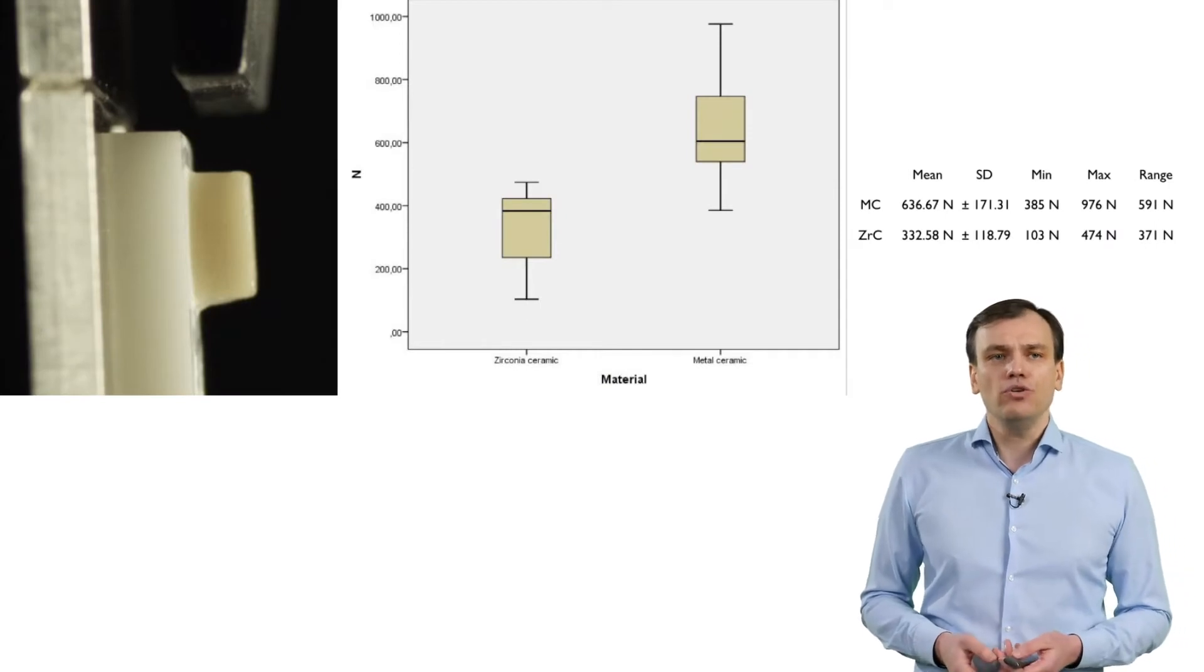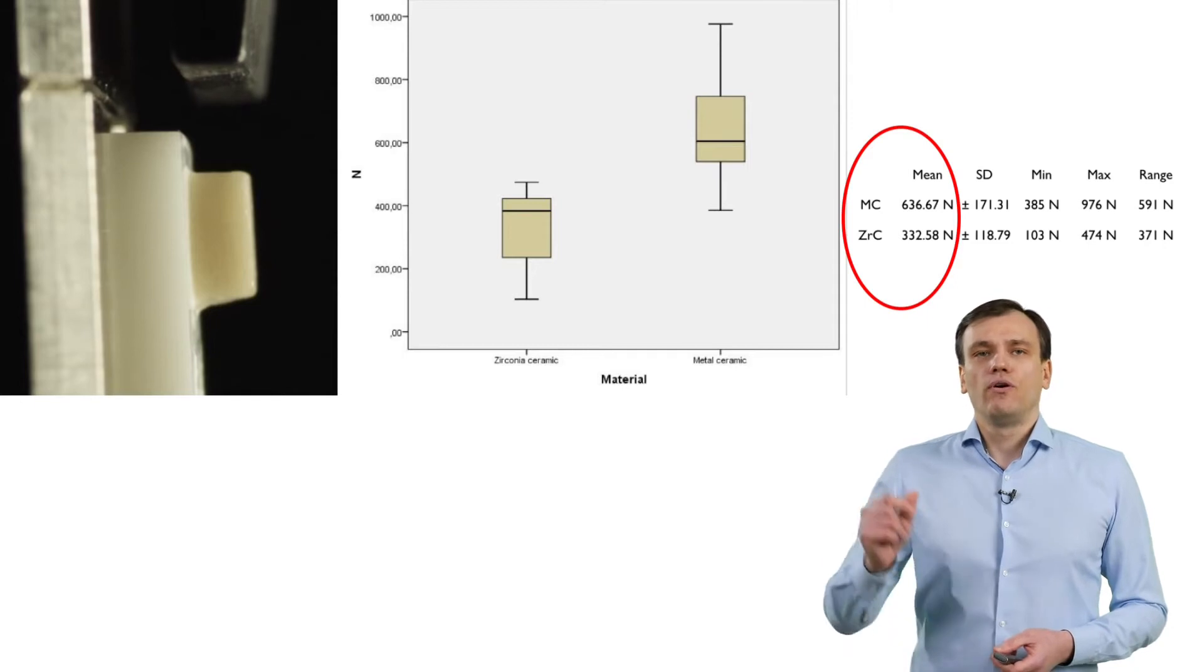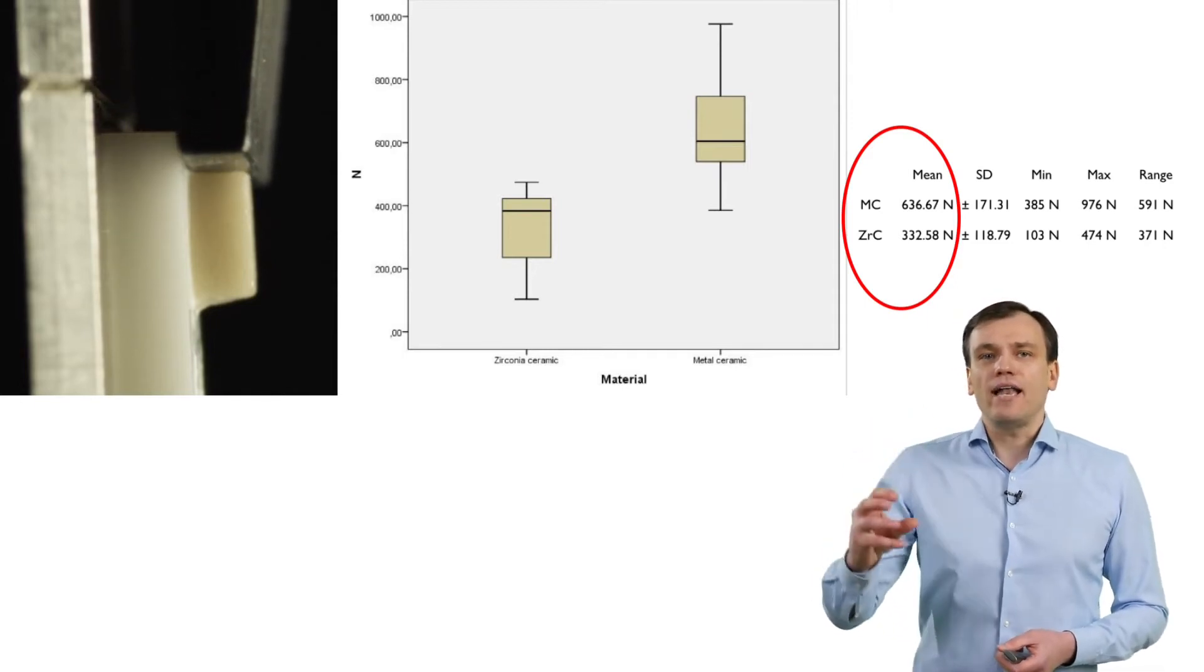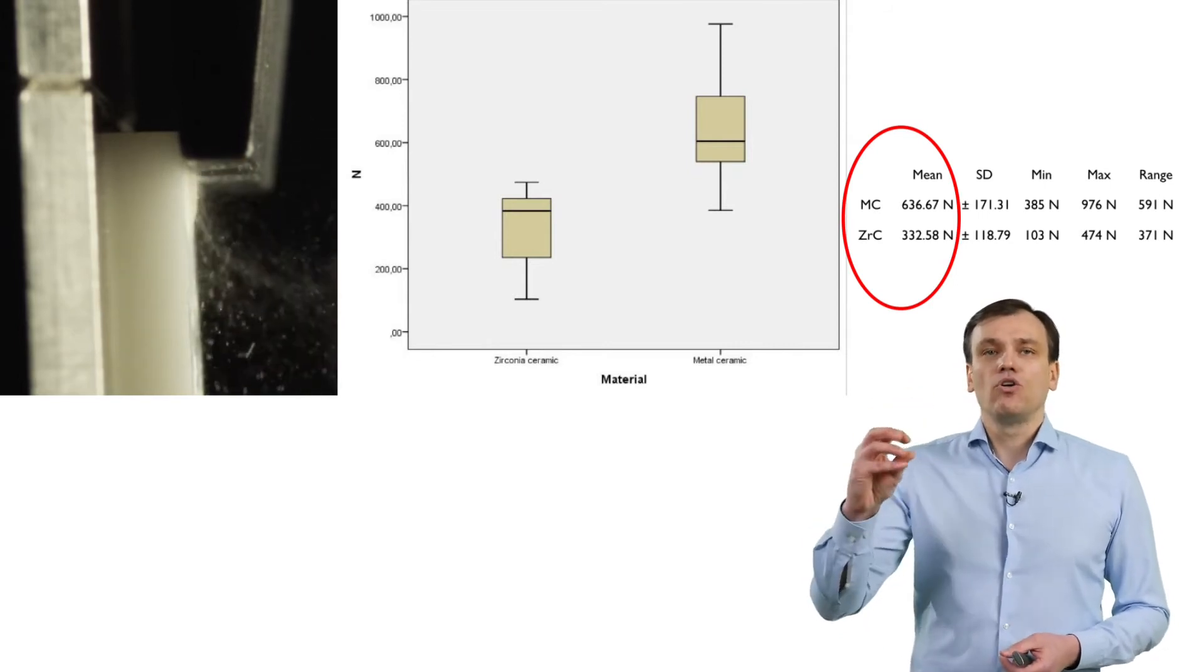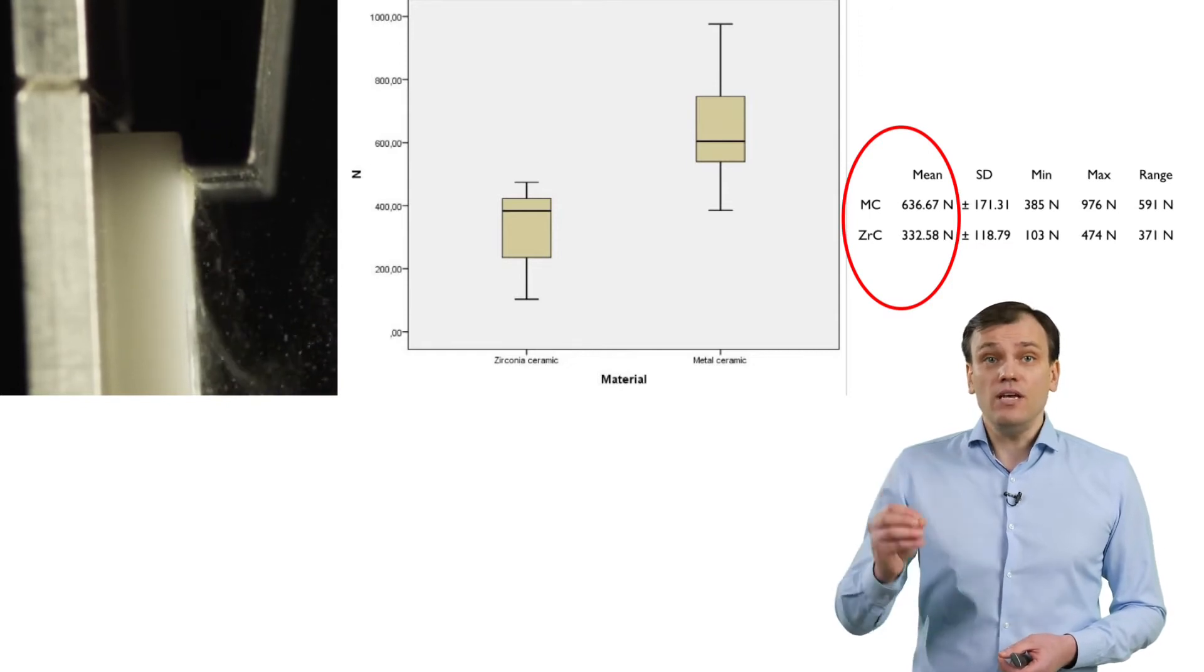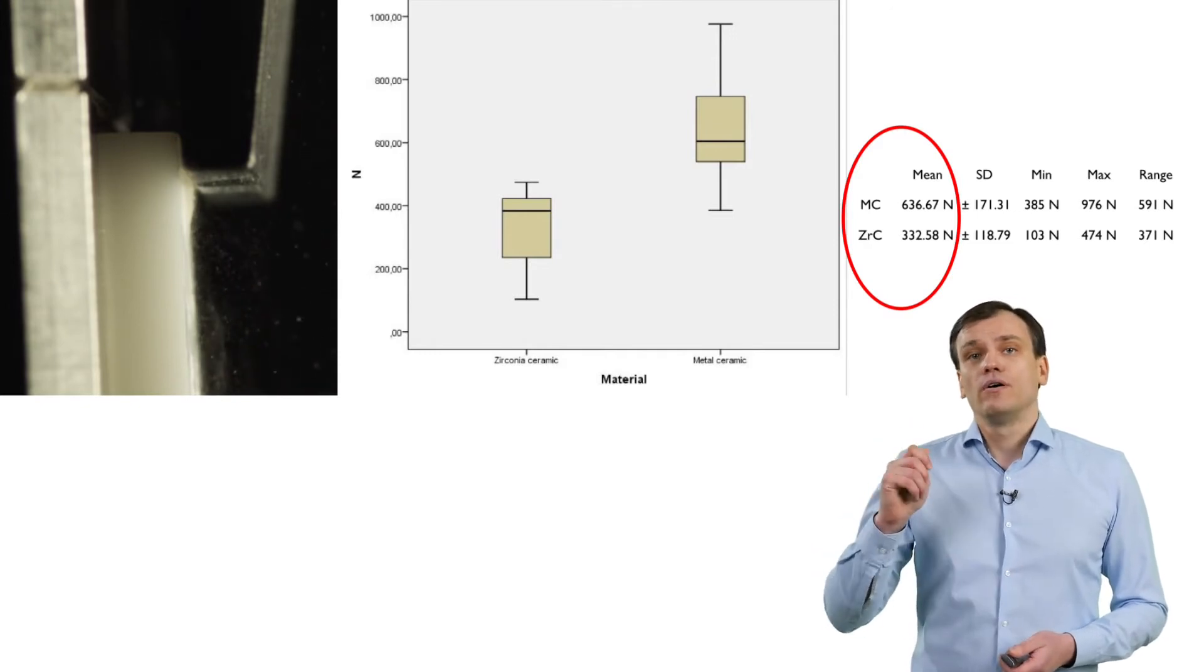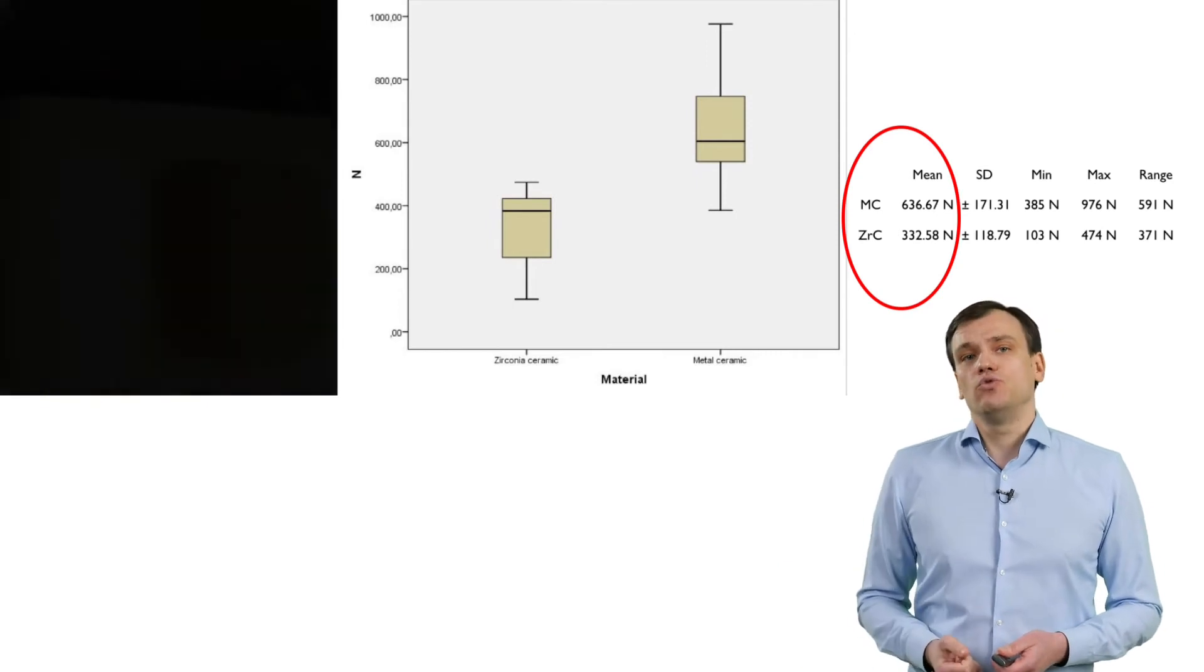And the outcome has shown that the bond of veneering ceramic to metal is at least twice as strong as the bond of ceramic to zirconia. Indeed, you have a lot of chipping of ceramics from zirconia because the bond is weak.